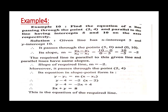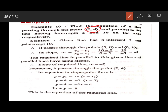The next example: find the equation of a line passing through the point (2, 4) and parallel to the line having intercepts 5 and 10 on the axes respectively. The x-intercept is 5 and y-intercept is 10, meaning that line passes through the points (5, 0) and (0, 10).